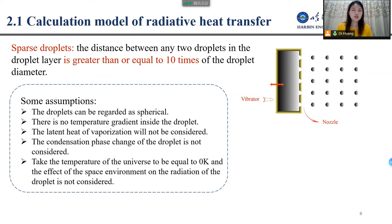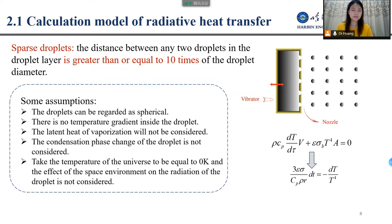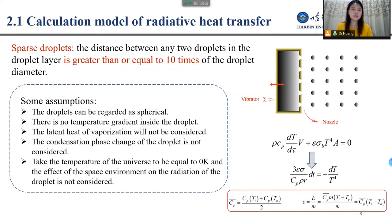Taking the temperature of the universe to be equal to 0 K, the energy conservation equation for the droplet can be written accordingly. When simplified, it reduces to a simpler form. Also, we can calculate the radiation power per unit mass of the droplet using the corresponding formula.